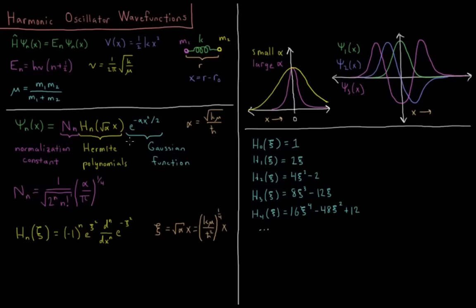And then the last part is a Gaussian function, e to the minus alpha x squared over 2. So this alpha value controls the width of that Gaussian. If alpha is very small, then you have a very diffuse Gaussian. If alpha is very large, then you have a contracted Gaussian, a very tight Gaussian. So as k goes up or mu goes up, both of these get very tight, and as k goes down or mu goes down, you get a more diffuse, more spread out wave function.